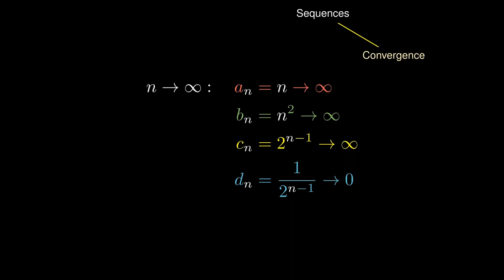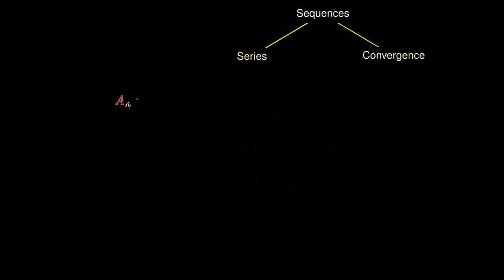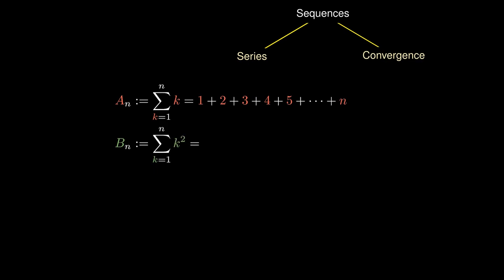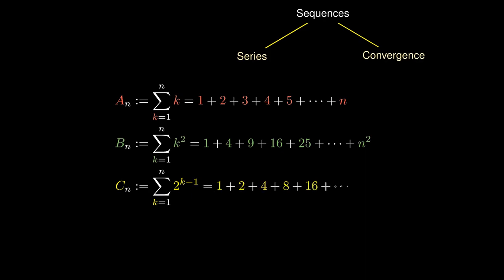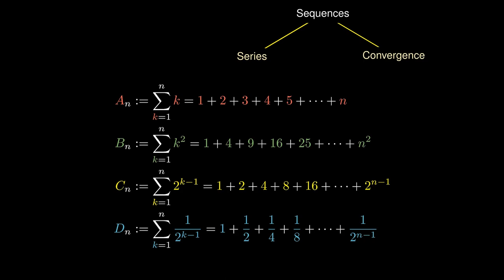A natural question is adding up these terms. We use the Greek letter sigma to denote summation, which is shorthand for term-by-term addition. For example, we add up 1, 2, 3, 4, and 5 all the way up to the nth term. For the second sum, we sum all square numbers: 1 plus 4 plus 9 plus 16 up to n squared. For the third, we add 1, 2, 4, and so on up to 2 to the n minus 1. Finally, the last sum adds the reciprocals of the powers of 2: 1 plus a half plus a quarter all the way up to 1 over 2 to the n minus 1.